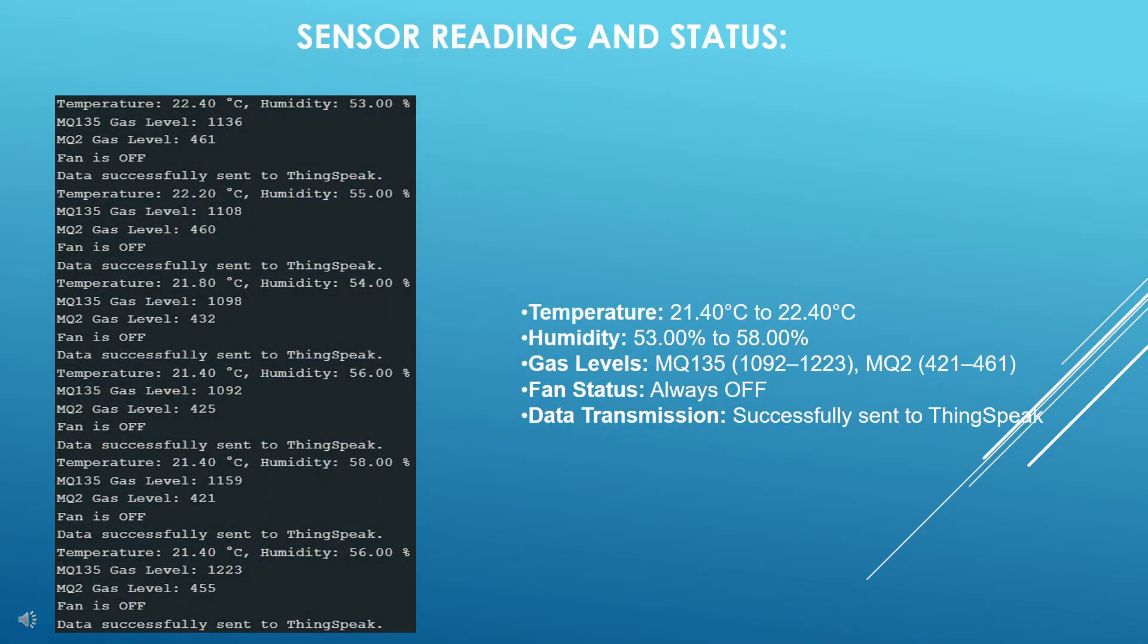This slide presents sensor readings and system status updates. The recorded temperature ranges from 21.40 degrees Celsius to 22.40 degrees Celsius, while humidity varies between 53.00% and 58.00%.